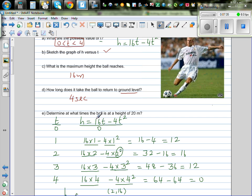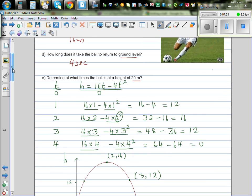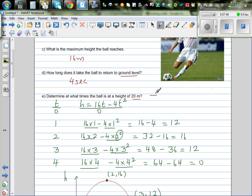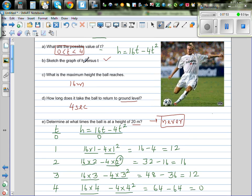And determine at which time the ball reaches 20 meters. Is the ball ever reaching 20 meters? This is the maximum height. It reaches after 2 seconds. So we can say it reaches 20 meters never. It can never reach 20 meters. If it has this equation. In this situation it never reaches 20 meters.